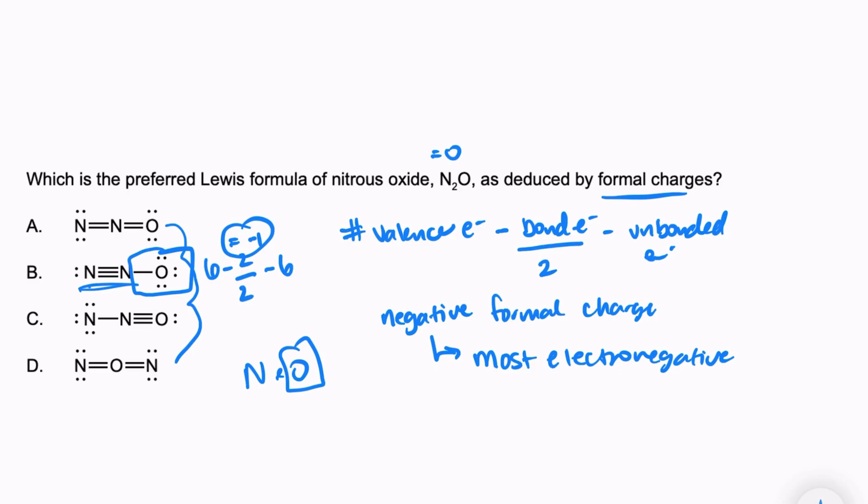Let's start with the nitrogen on the left-hand side. In total, nitrogen will always have five valence electrons. There's six total bonded electrons there. We have three bonds, three times two is six over two, minus on the left-hand side we have two unbonded electrons. So I have five minus three minus two, which equals zero.